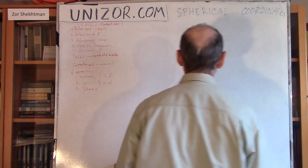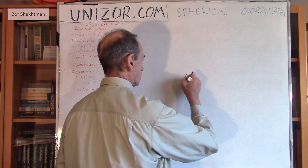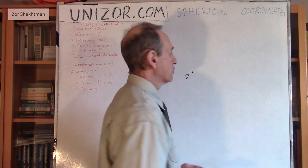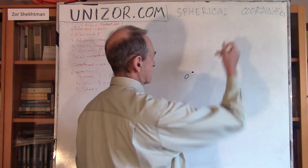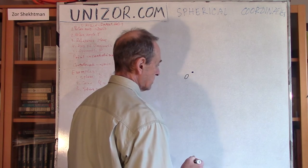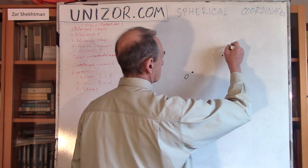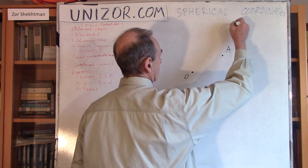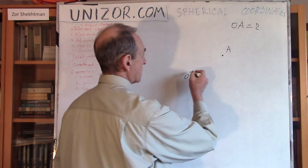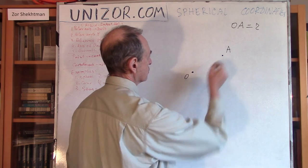Here is what it is. As always, we have to have some kind of an origin — a fixed point relative to which we will describe the position of our point using numerical characteristics. The next thing is the distance from the point in question, OA, equal to R. It's a radial distance, basically like a radius from the origin of coordinates to the point.